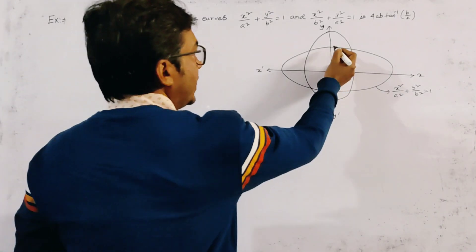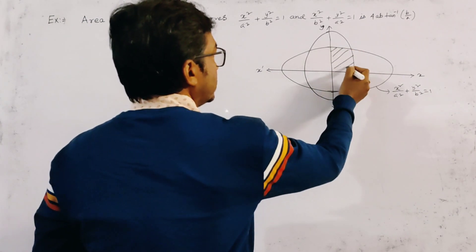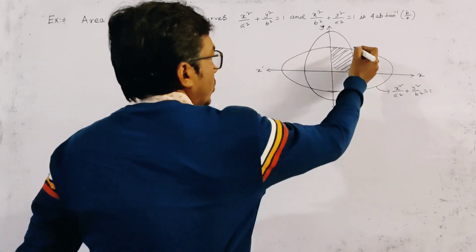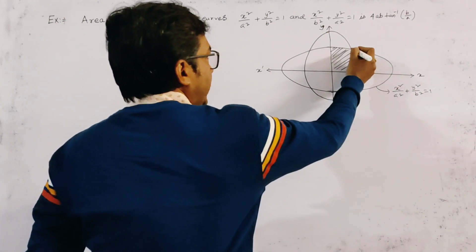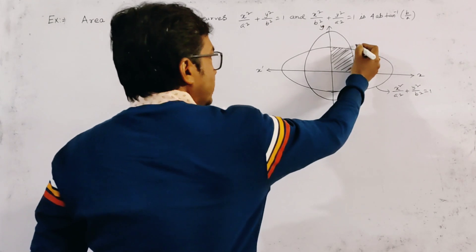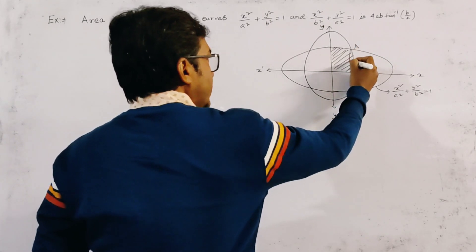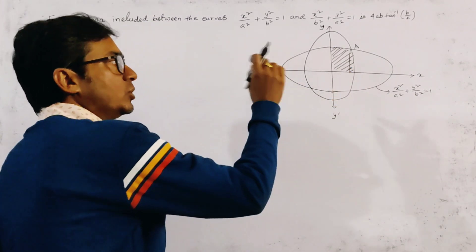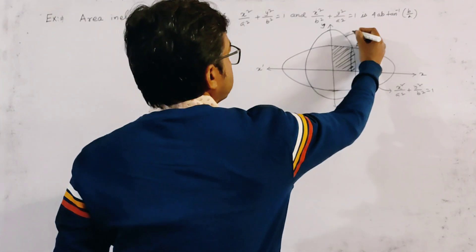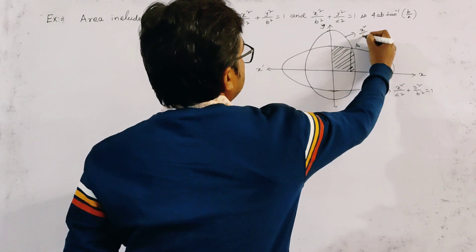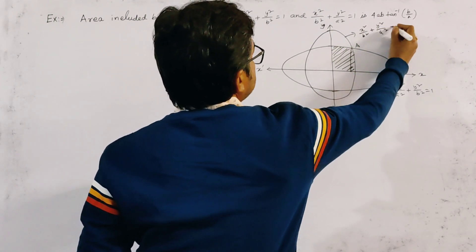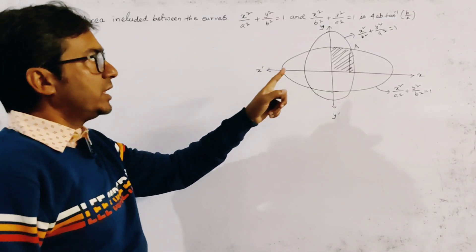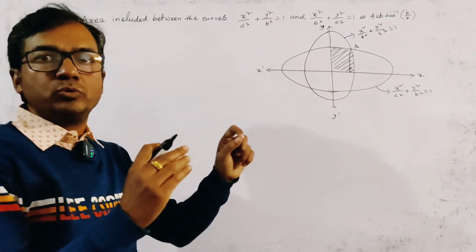That is the area shaded by dots — we have to find this area only. We draw a perpendicular on the x-axis from point A. Point A is the point of intersection of the two curves. The second curve is x²/b² + y²/a² = 1. So our first task is to find out the intersection of the two curves.